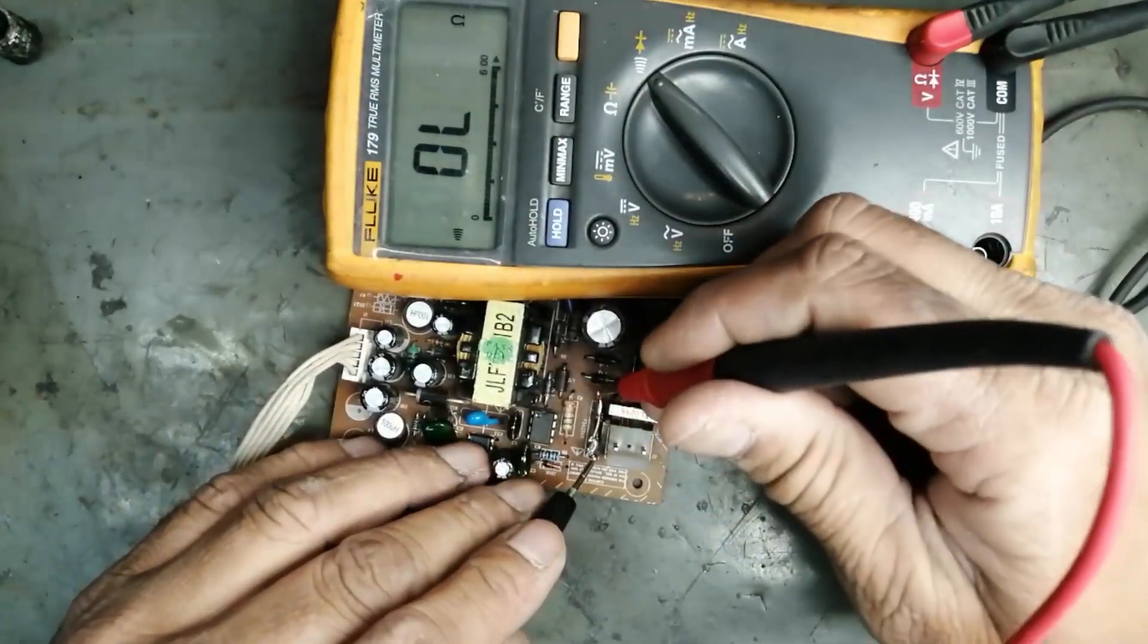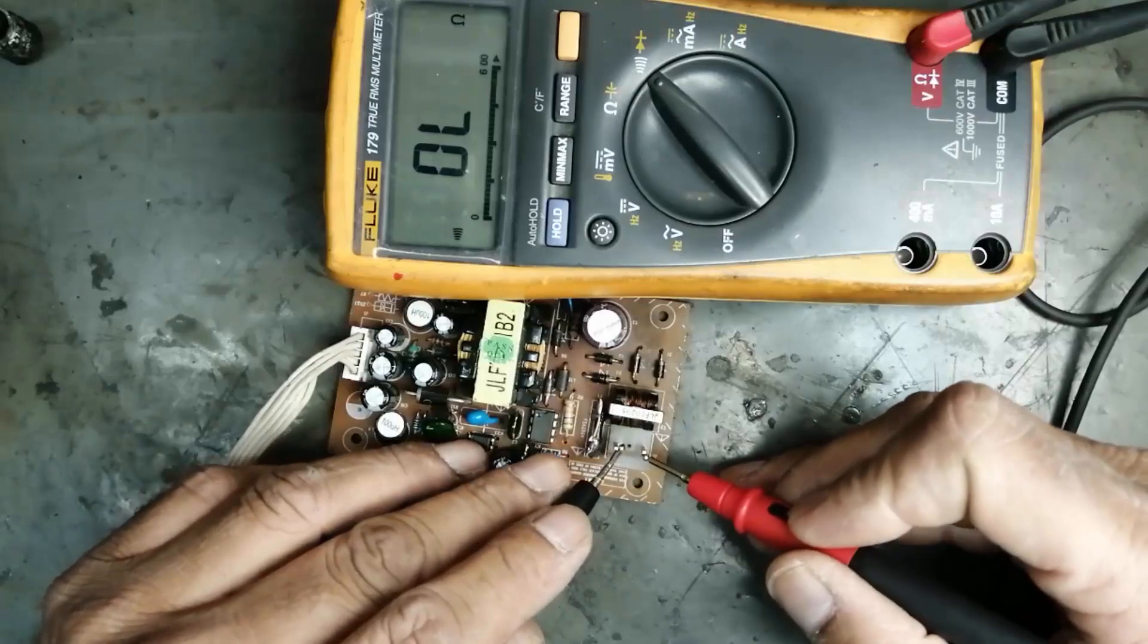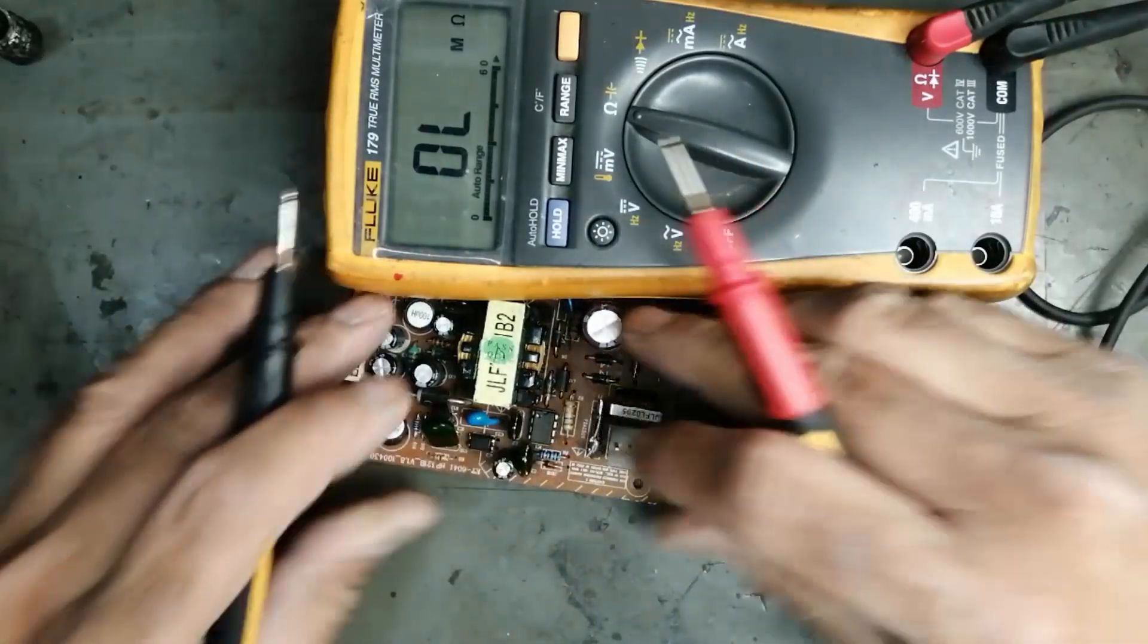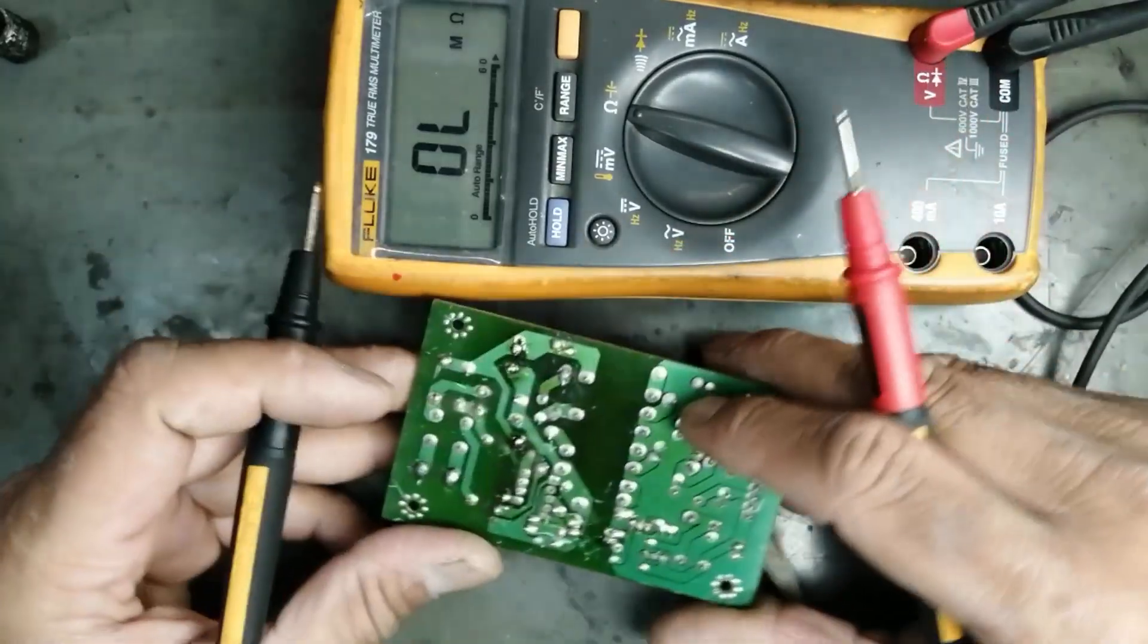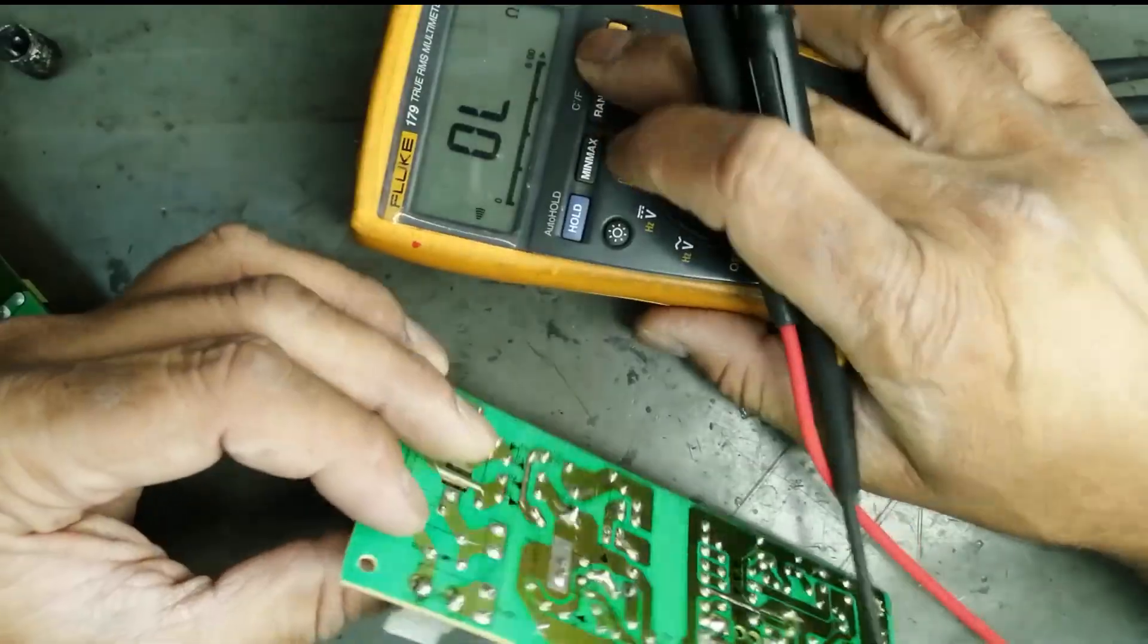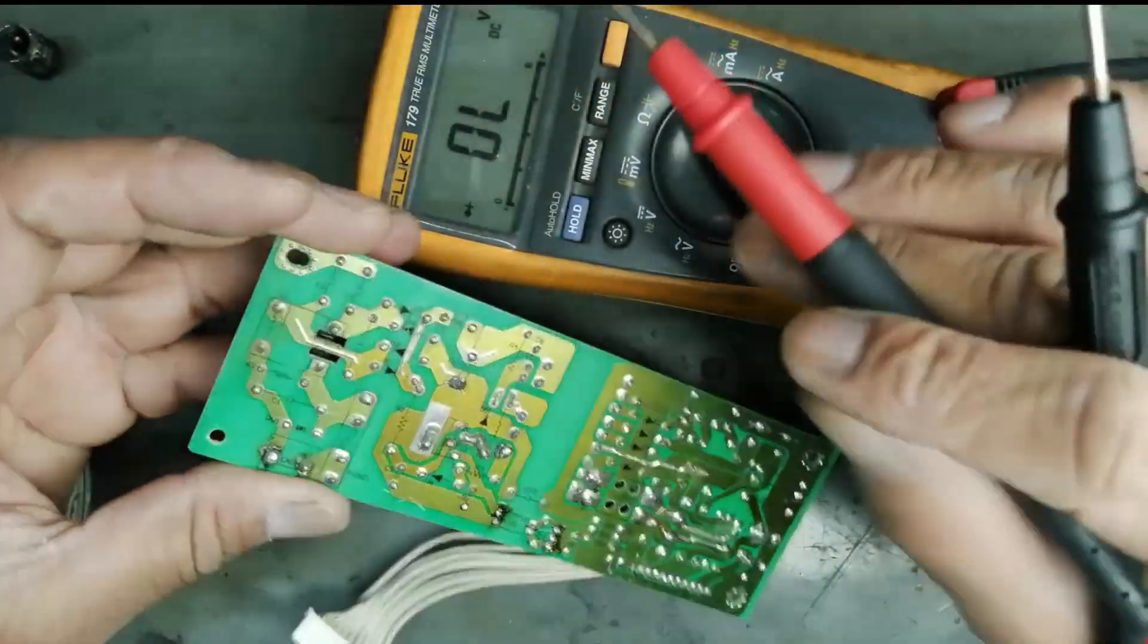Now I install the fuse, but still it has no reading. How you can test in a very easy step for any power supply? Set the multimeter to diode mode.